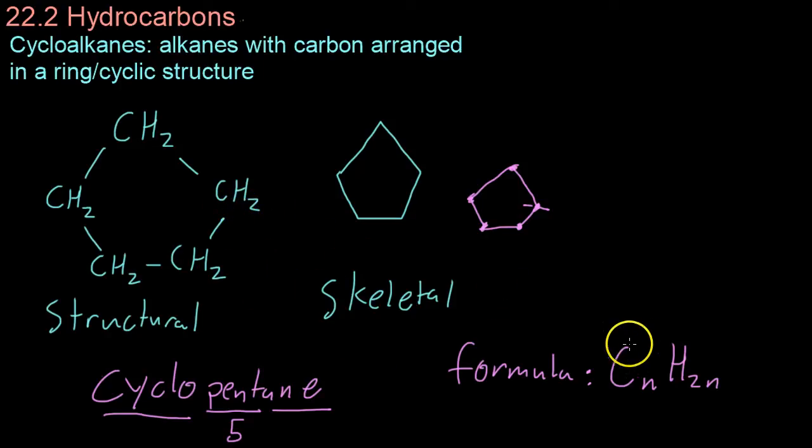And the general formula for cycloalkanes is CnH2n. Because each carbon will have two associated hydrogens. And unlike regular alkanes, there's no end where you have to have that extra carbon on either end of the compound. So, there's no plus two. It's just CnH2n.